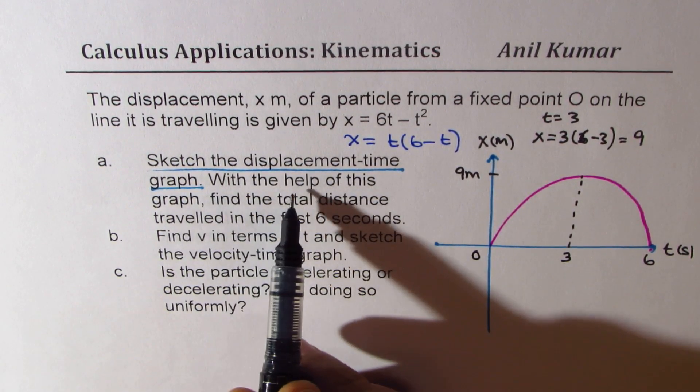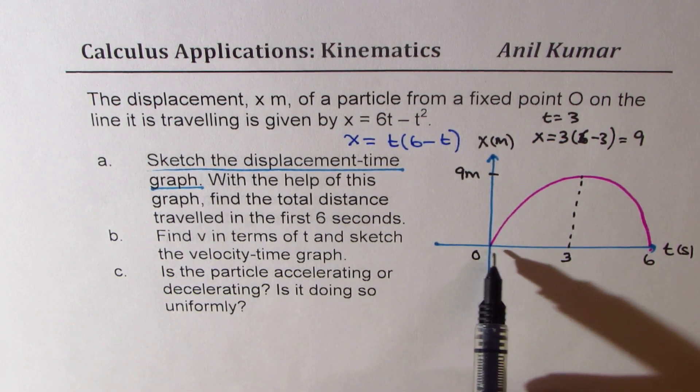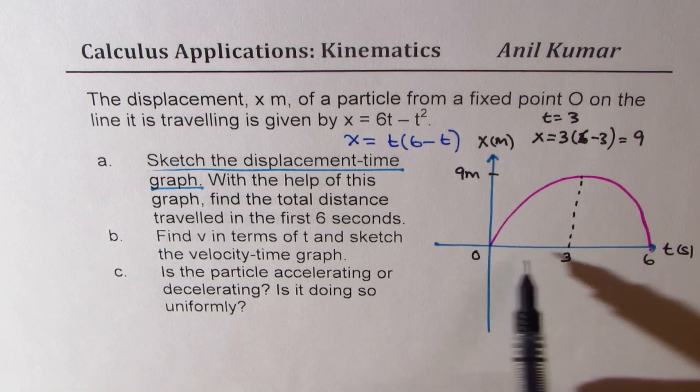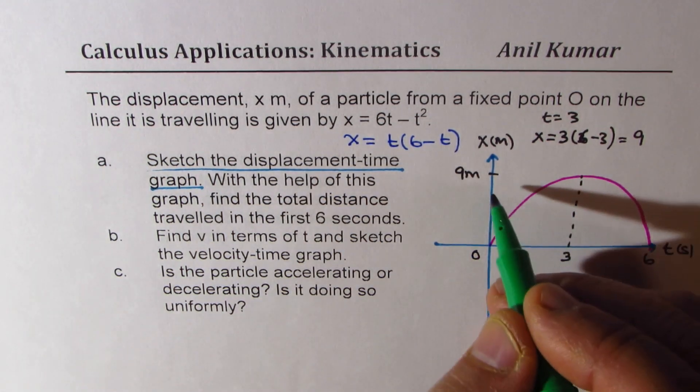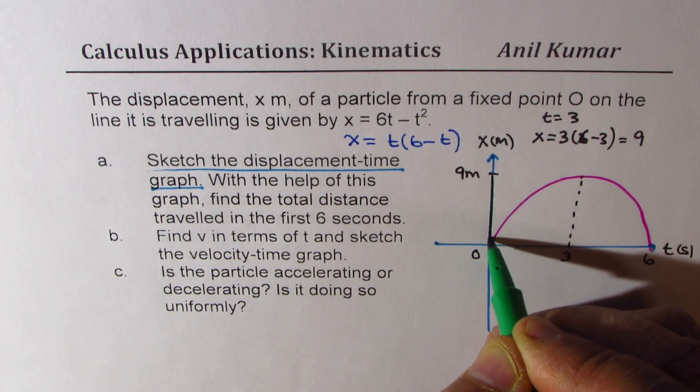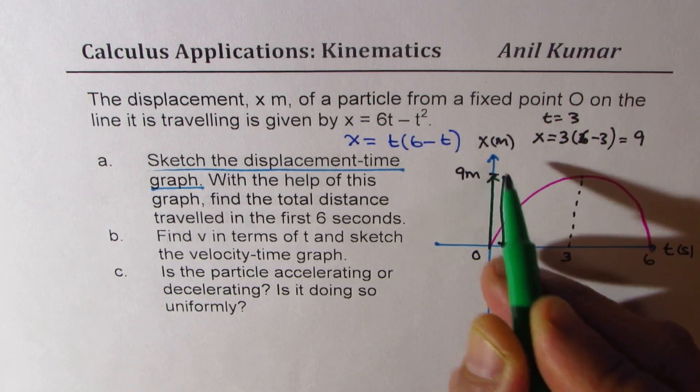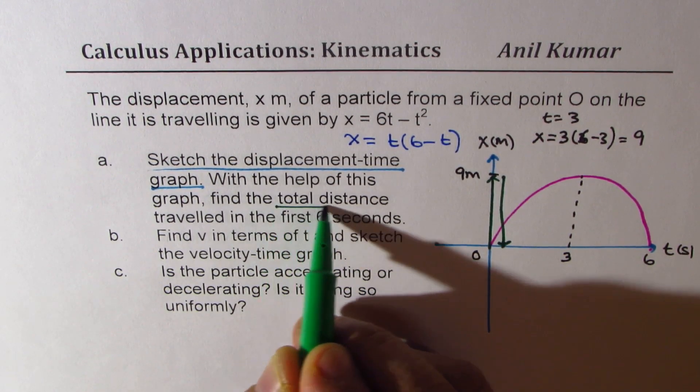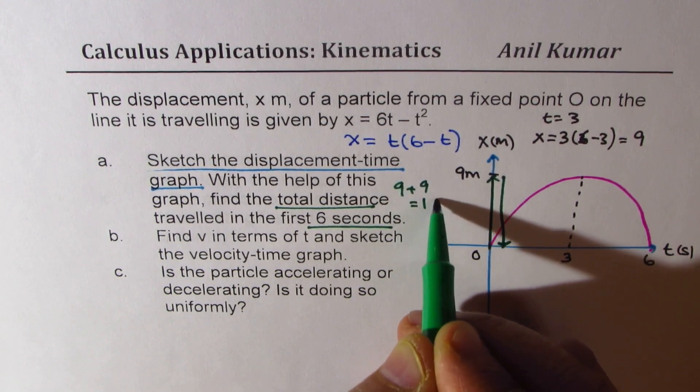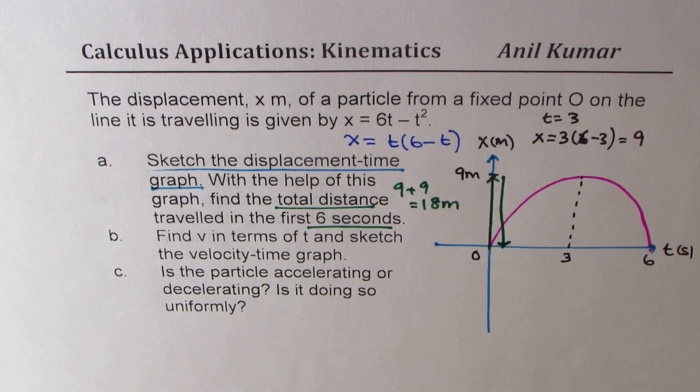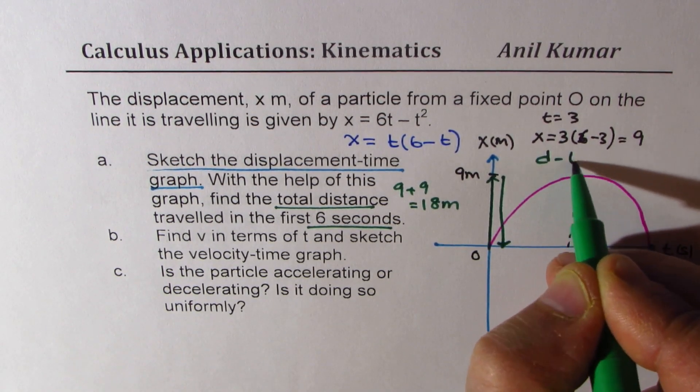Now with the help of this graph, find total distance traveled in the first 6 seconds. So time 6 seconds is right there. What is the distance traveled? Well, if you look at the particle, it's moving along a straight line. So it basically goes away 9 units and then comes down the same distance. So the distance traveled in the first 6 seconds is 9 plus 9 which is 18 meters. So that is how from the graph you can get it.